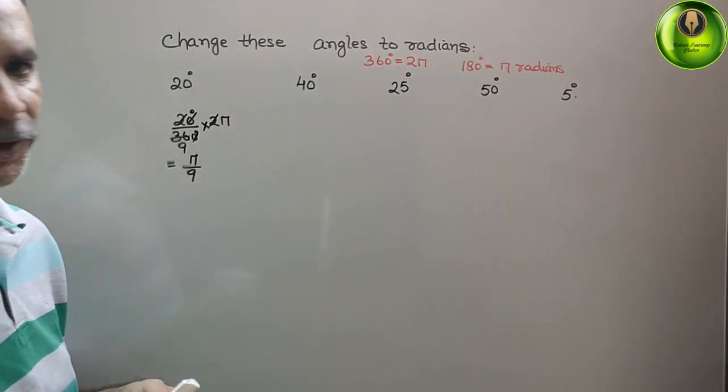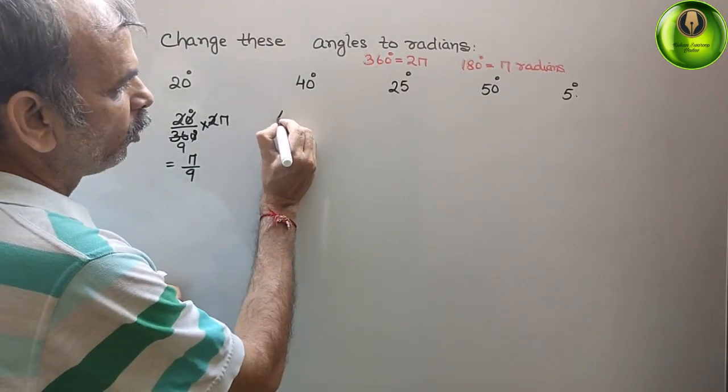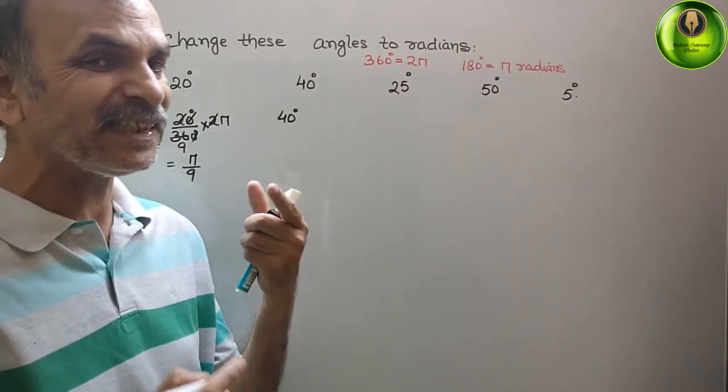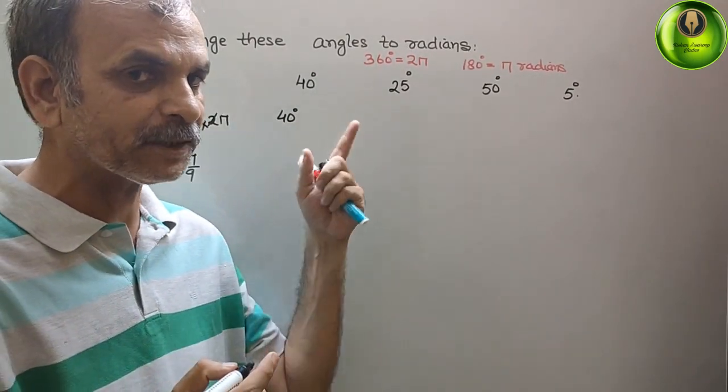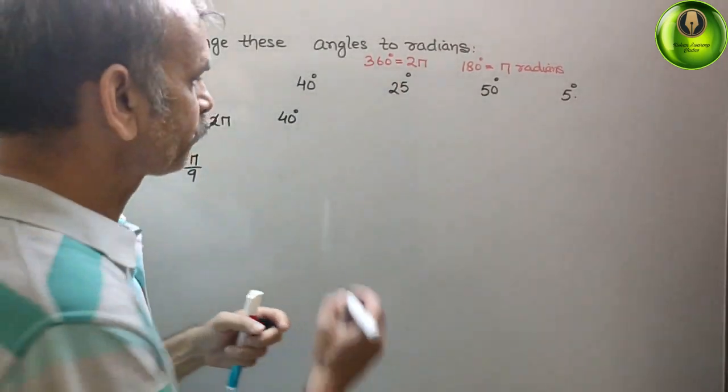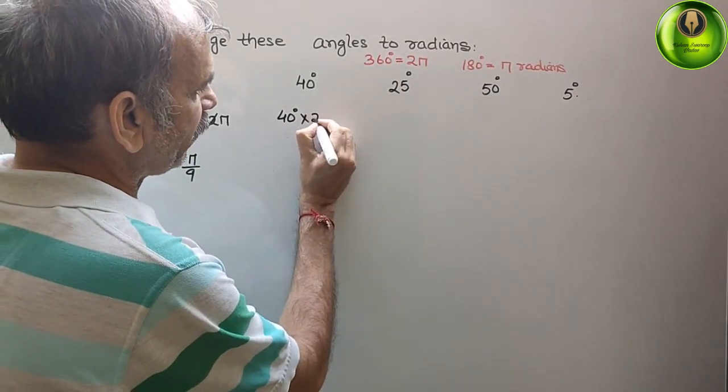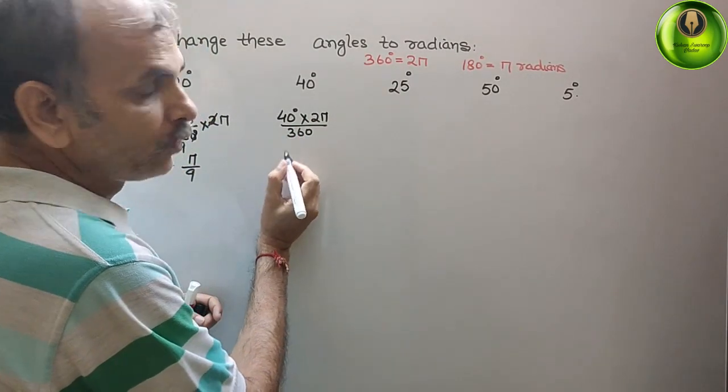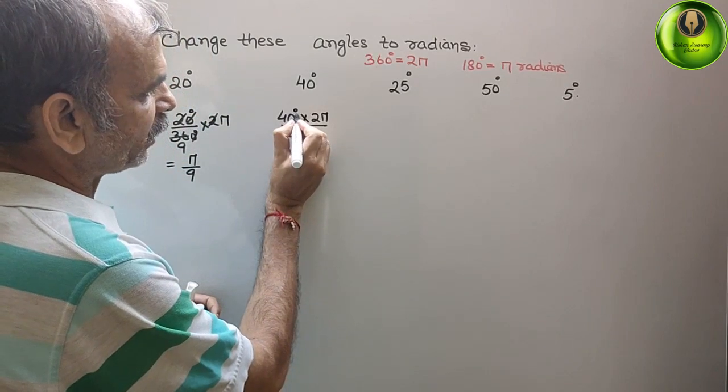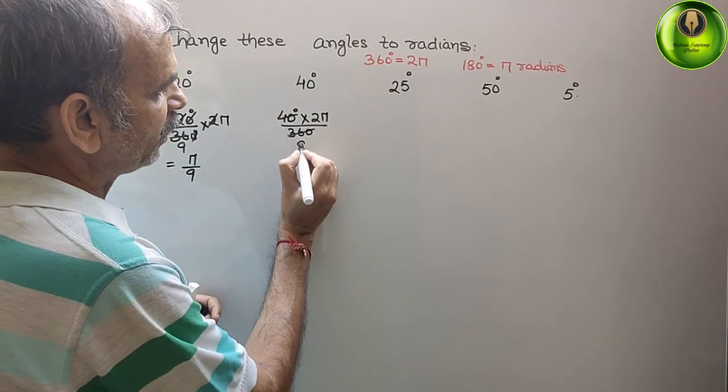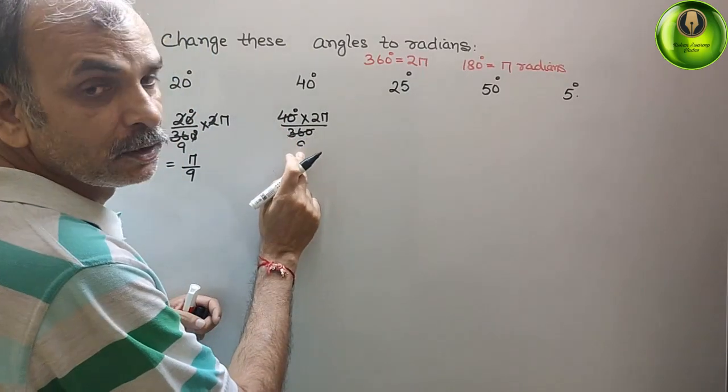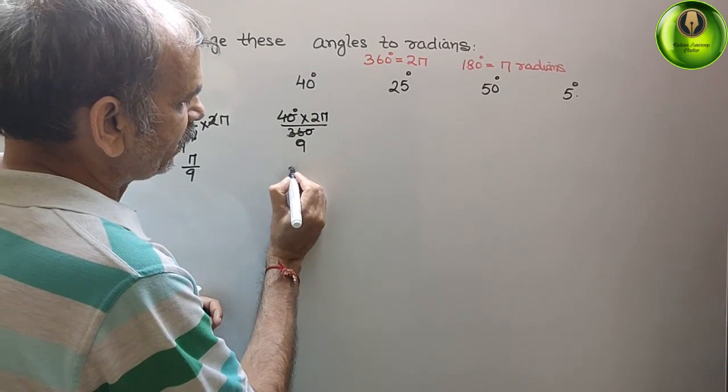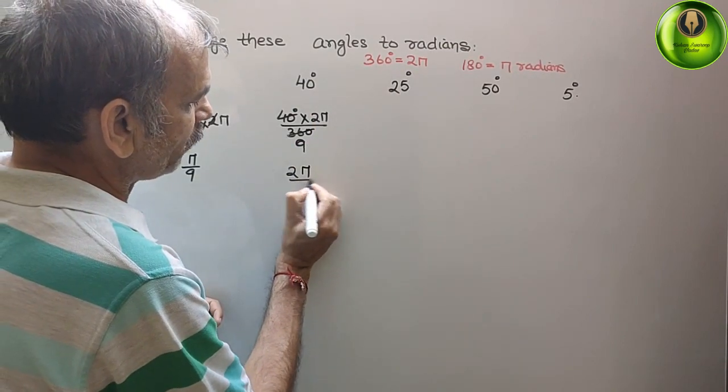Here, 40 degree. So how we will do? 40 degree, multiply and divide by 360 degree. But upside you have to write radians, that is 2π. So into 2π by 360 degree. So now, cut it. This is your how much? 4, 9. Here 2π by 9. This answer is your 2π by 9.